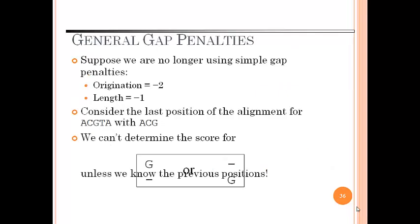Suppose we are no longer using simple gap penalty. Now the origination is minus 2 and length is minus 1. Consider the last position of the alignment for the given sequence. We can't determine the score for G.